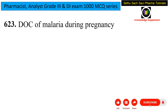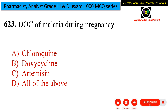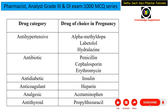Next question: the drug of choice for malaria during pregnancy. Is it chloroquine, doxycycline, artemisinin, or all of the above? All these drugs are used for malaria, but the drug of choice specifically during pregnancy is chloroquine. This is a very direct question.